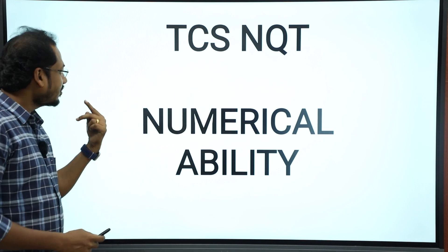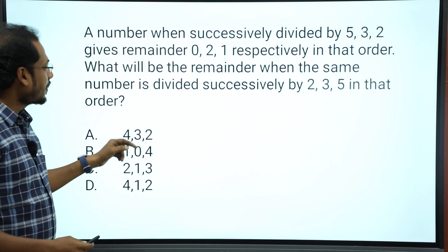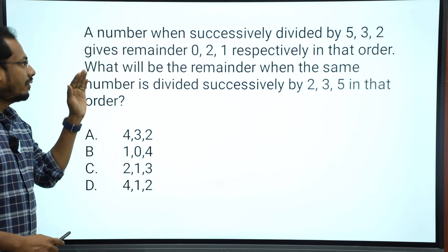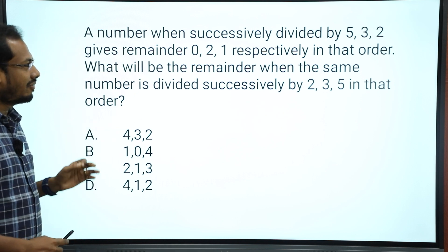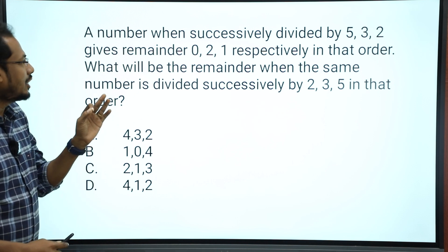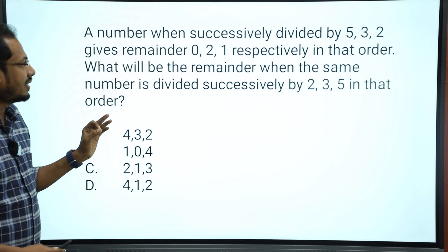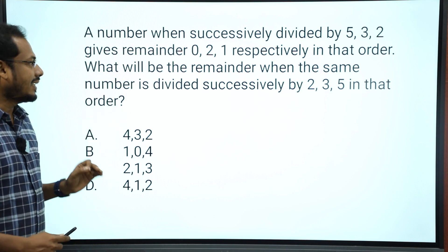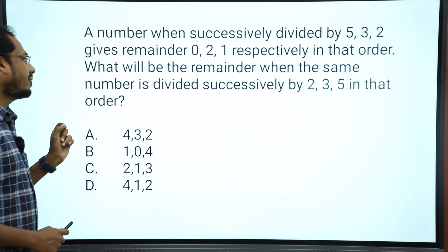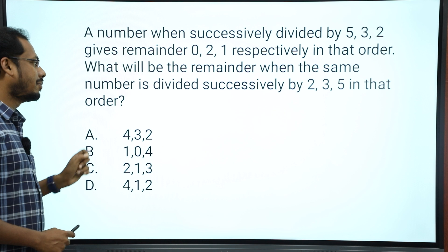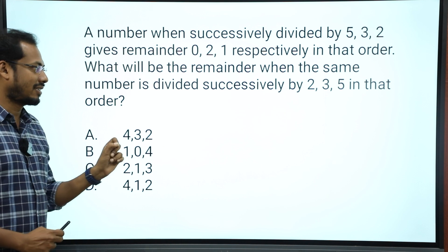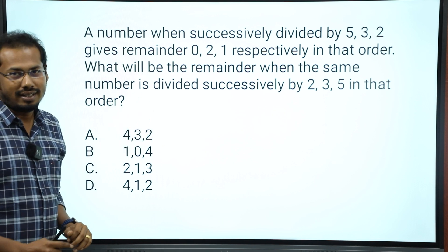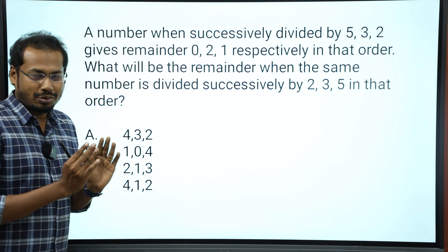First question. Look at this: a number when successively divided by 5, 3, 2 gives remainders 0, 2, 1 respectively in that order. What will be the remainder when the same number is divided successively by 2, 3, 5 in that order? This is a normal question, but with a little difference.